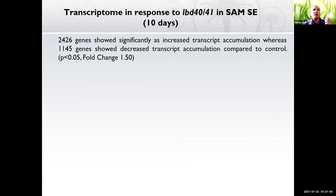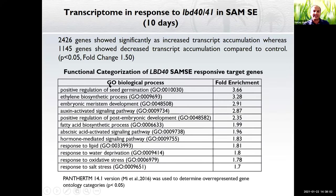We also looked at gene expression in the lbd40/41 mutant via RNA sequencing and found more than 2,000 genes with increased transcript accumulation and over 1,000 genes with decreased accumulation compared to control Columbia. Functional categorization of these genes showed categories related to embryogenesis: embryonic meristem, fatty acid biosynthesis, abscisic acid response, response to lipid, oxidative stress, and water deprivation — all known to have prominent roles in embryogenesis.